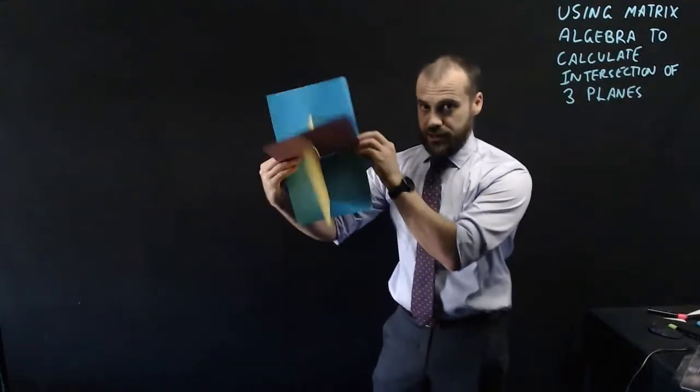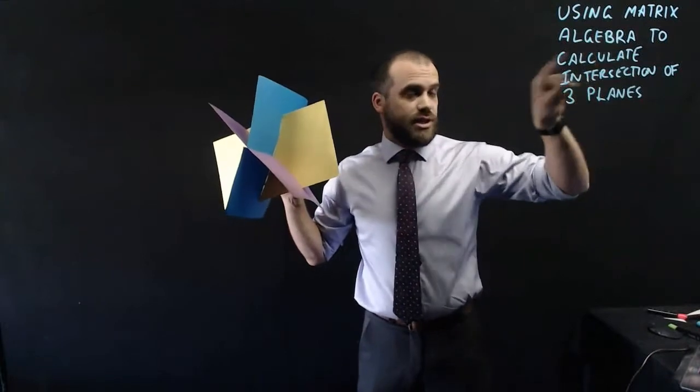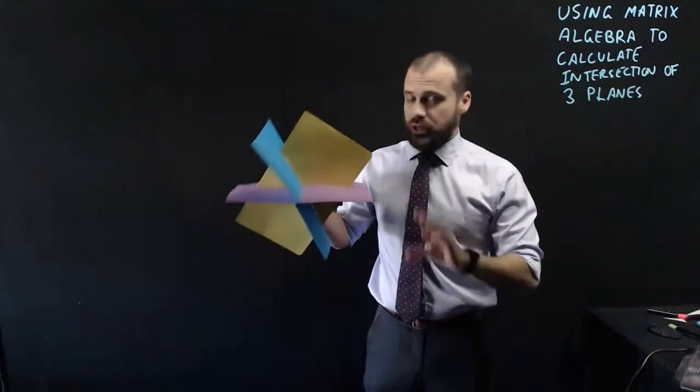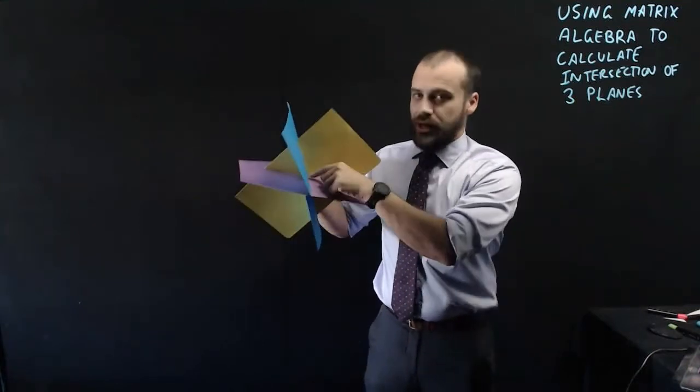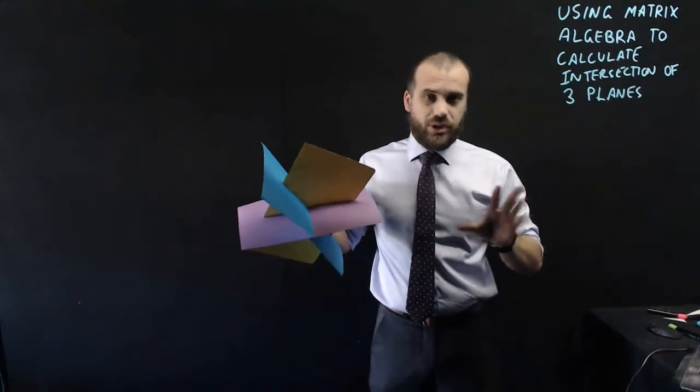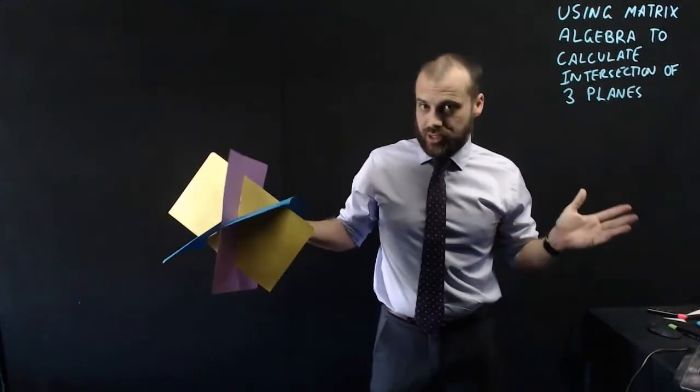If you have three planes that meet at a single point, you can use matrix algebra to find that single point. Now this will only work if you are absolutely sure that they meet at a single point. If your planes don't meet at a single point, let's say they meet on a line, this technique is not going to work. You'll need a different technique.